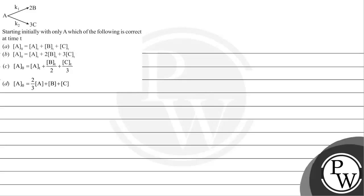Hello, let's read this question. A gives 2B and 3C with rate constants K1 and K2, starting initially with only A. Which of the following is correct at time T? These are the equations given to us. Let us start solving this.